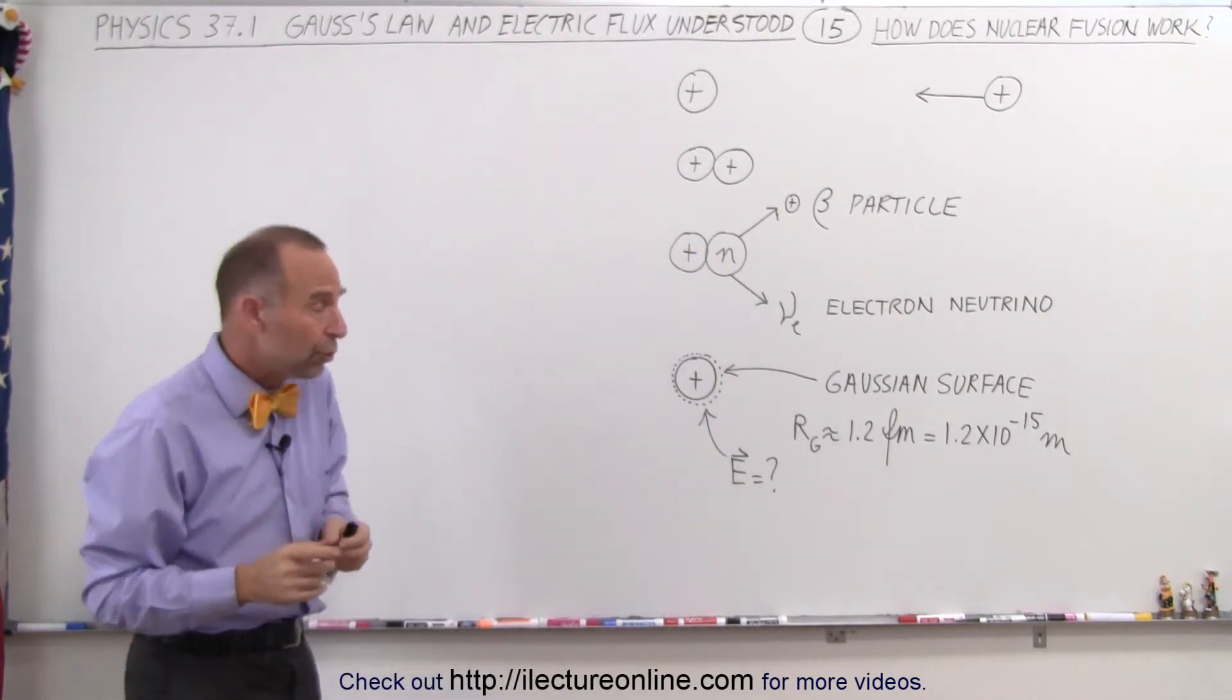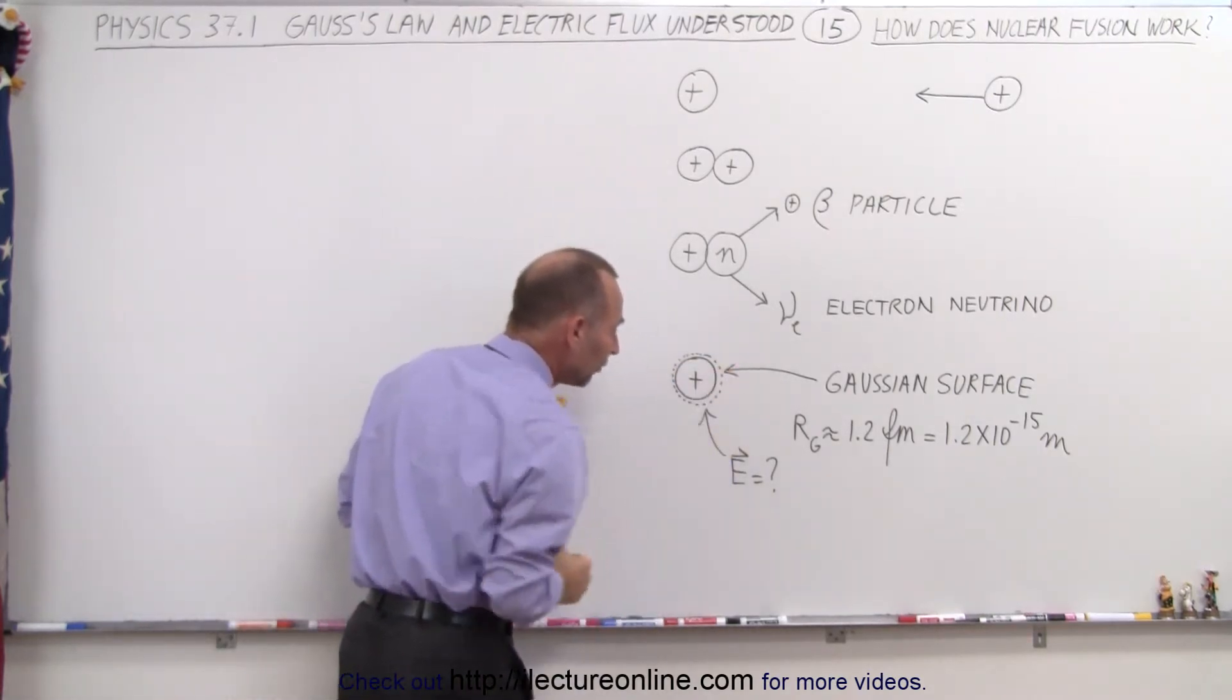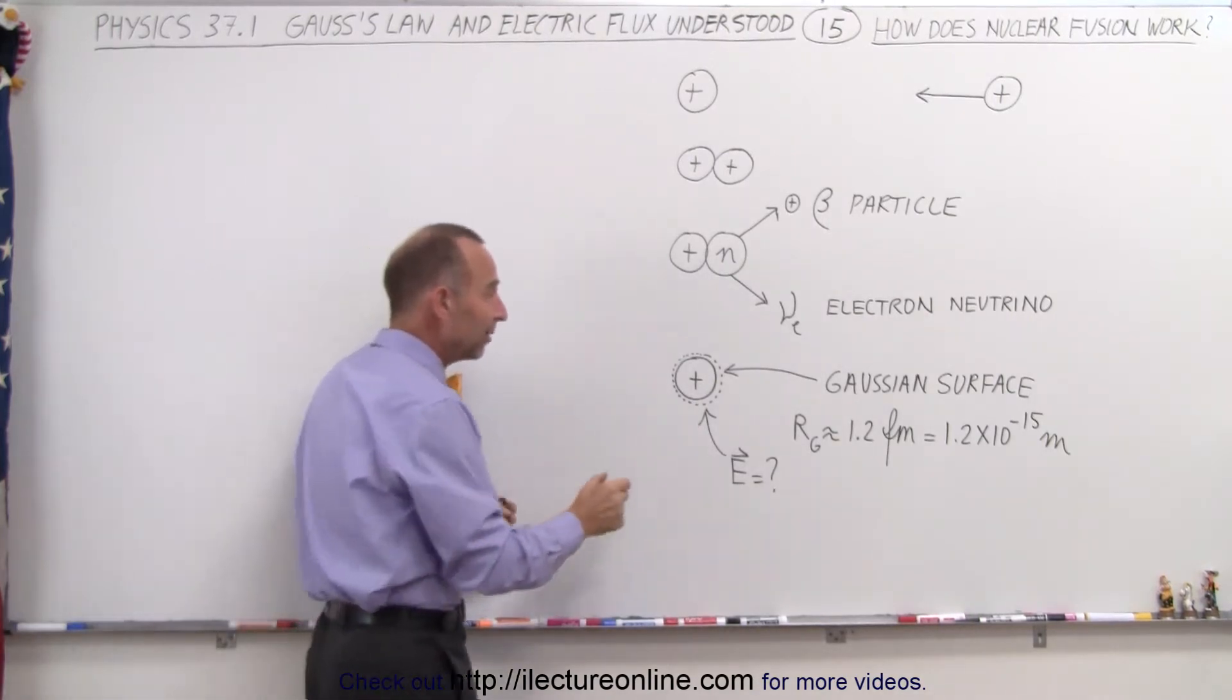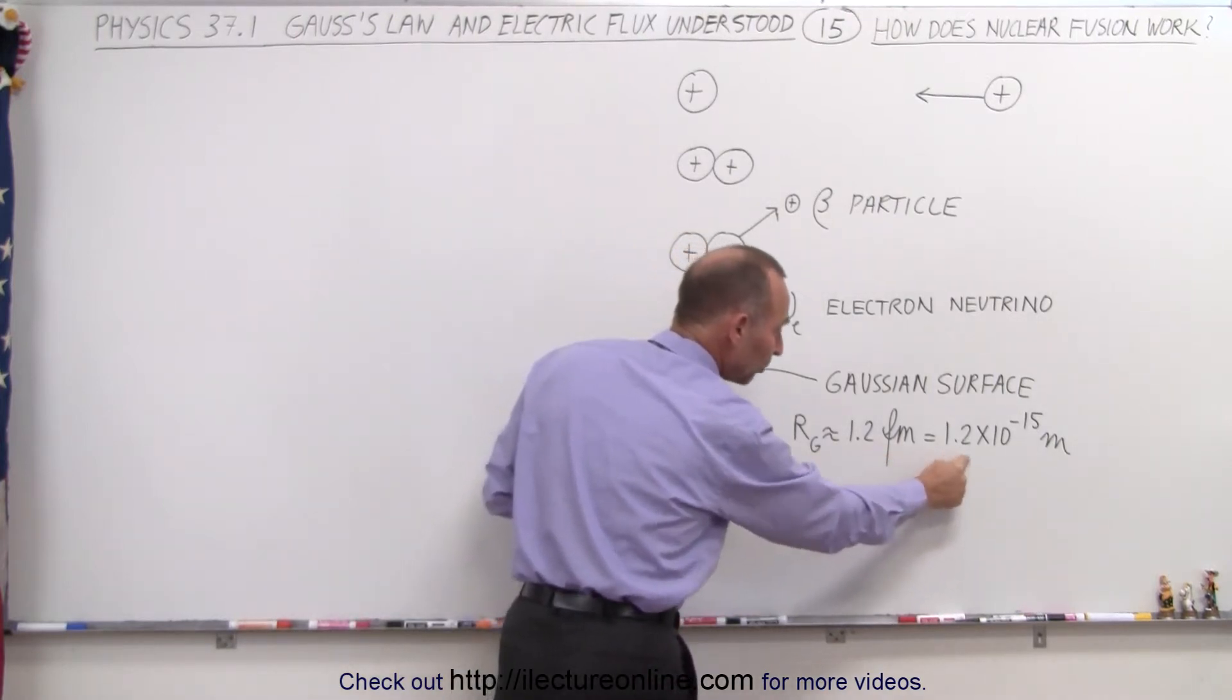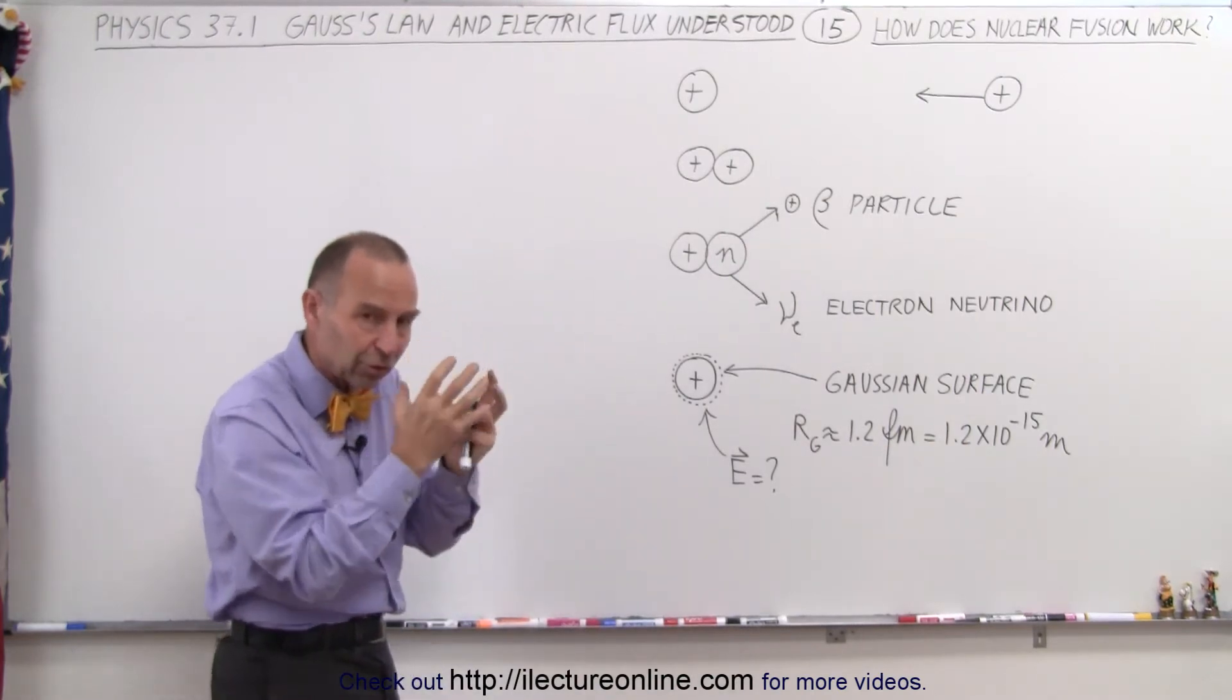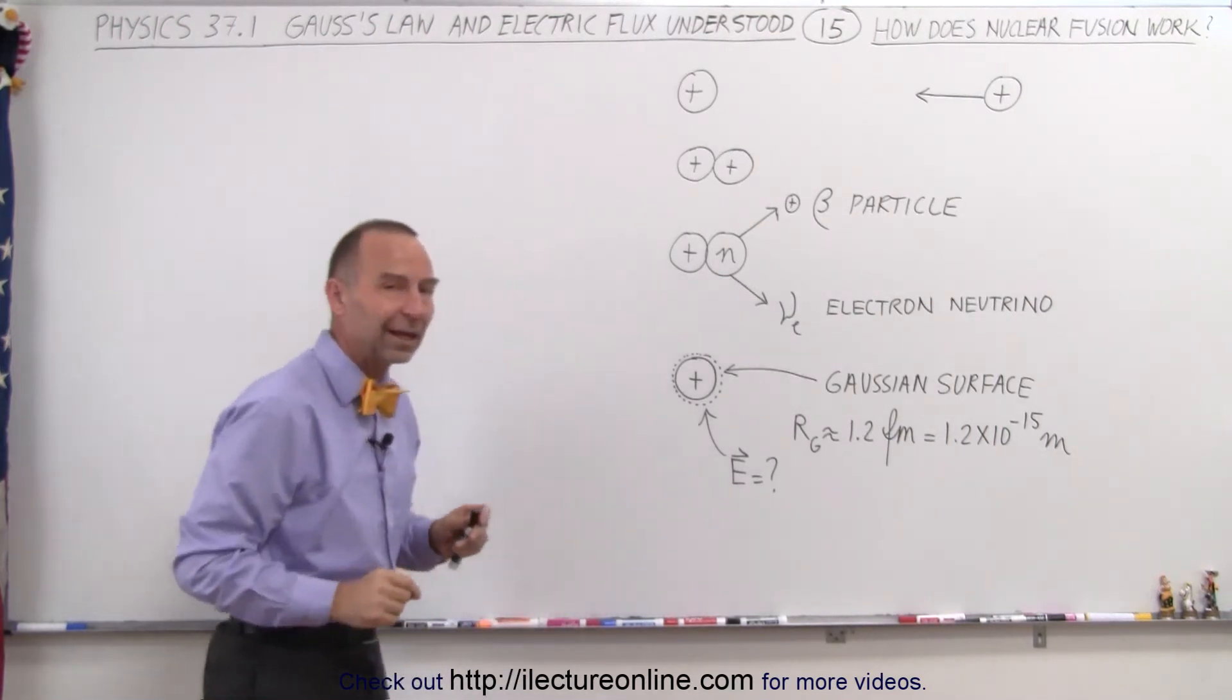So what we're going to do here is calculate the electric field right around the nucleus of a hydrogen atom, which is basically a proton. So we realize that the radius of a proton is roughly 1.2 femtometers, which is 1.2 times 10 to the minus 15 meters. And so we assume then that the Gaussian surface is right at that radius, and we're going to calculate the electric field at that location.